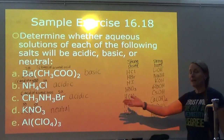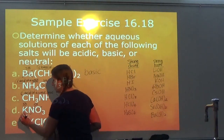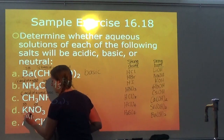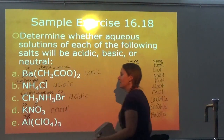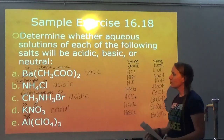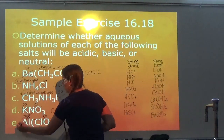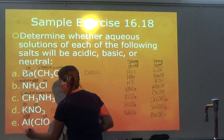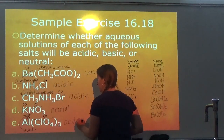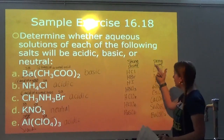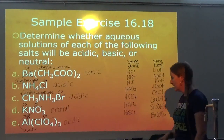For Al(ClO₄)₃: Al is not from a strong base, so we classify it as a metal ion. ClO₄⁻ is from a strong acid, so it is not going to affect pH. Metal ions make the solution acidic — as long as it's not one of the metals from the strong bases, which it was not. So the solution is acidic.